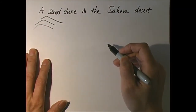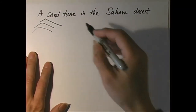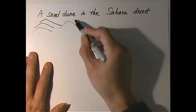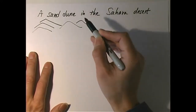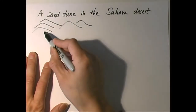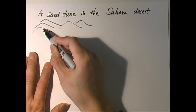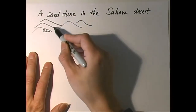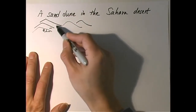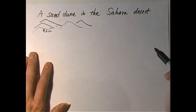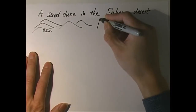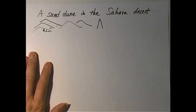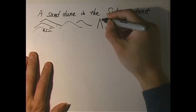If you take a closer look, you'll find these sand dunes are similarly shaped — the angle of inclination is not that far from one another. Have you ever seen a sand dune that's shaped like this? Obviously, it's too steep.